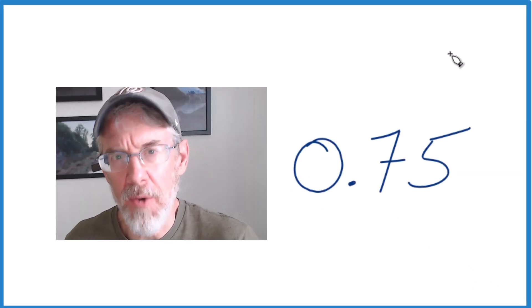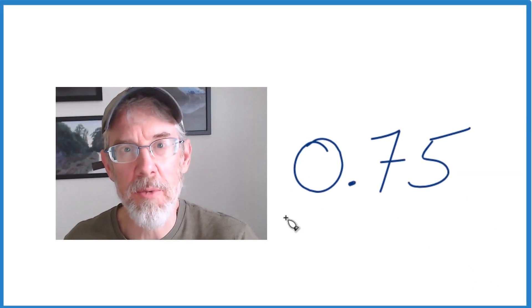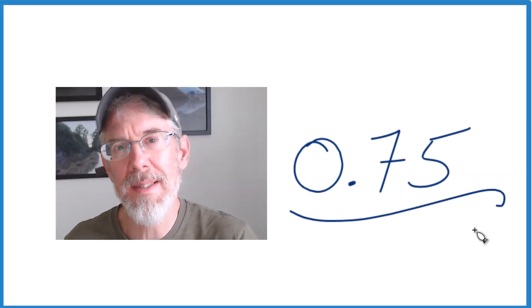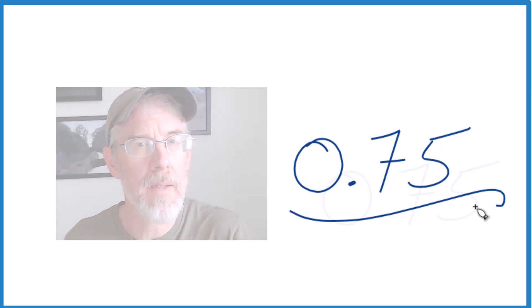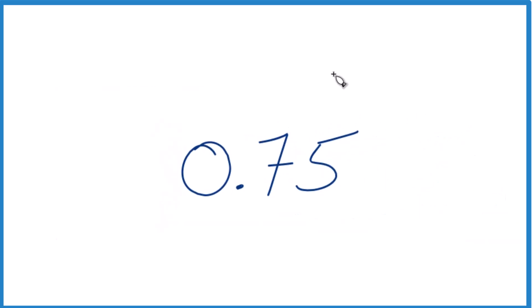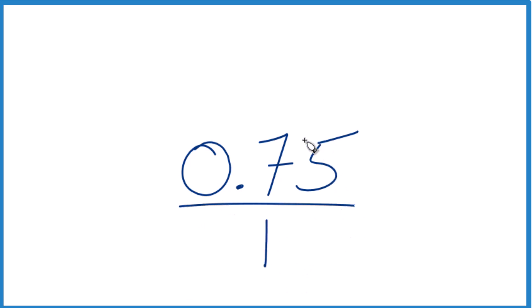Let's convert the decimal 0.75 to a fraction. First off, let's put this over 1. That gives us the start of a fraction. We don't really like having the decimal up there, but we have the start of a fraction.